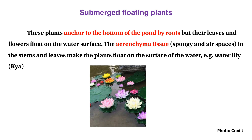The aerenchyma-like sponges and airspaces in the stems and leaves make the plant float on the surface of the water.